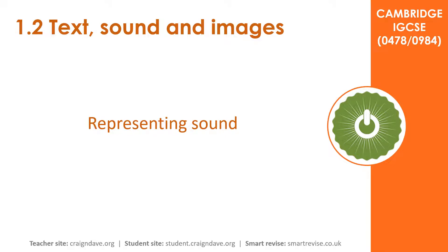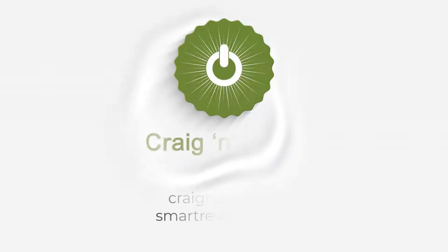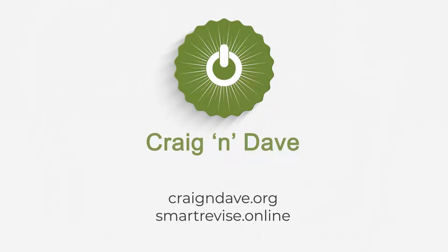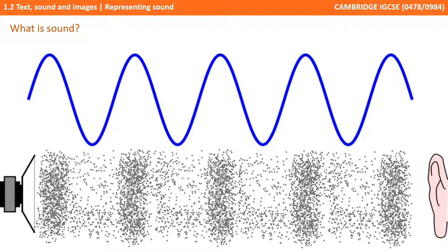In this video we explore how sound is represented in computer systems. Sound is a vibration that propagates as an audible wave of pressure through the air. In human physiology, sound is the reception of these waves and their perception by the brain. The sound waves are generated by a sound source such as the vibrating diaphragm of a speaker and detected by a microphone or the human ear.